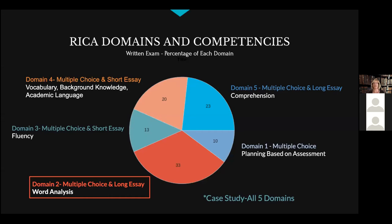There are five domains. Domain one — planning based on assessment — only has multiple choice questions, yet all essay questions must address planning and assessment as well. Domain two — word analysis — has multiple choice and a long essay; this is the hardest section, particularly for those who learned to read in the era of whole language. Domain three covers fluency with multiple choice and a short essay. Domain four covers vocabulary, background knowledge, and academic language with multiple choice and a short essay. Domain five covers comprehension with multiple choice and a long essay.